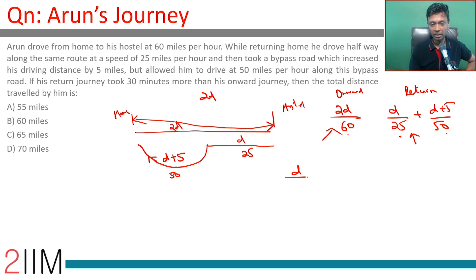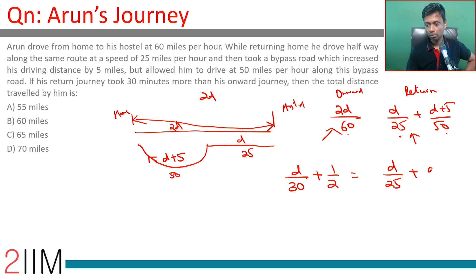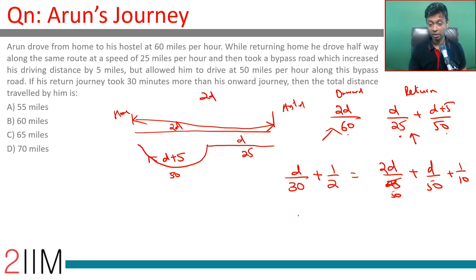The onward journey would have taken 2D divided by 60. Setting up the equation: 2D/60 plus 1/2 equals D/25 plus D/50 plus 1/10. On the right side, D/25 plus D/50 is 2D/50, so this simplifies to 3D/50. So we have 1/2 minus 1/10 equals 3D/50 minus D/30.